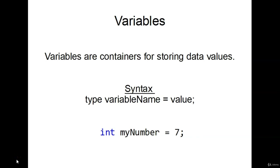In this video, we're going to cover variables. Variables are just containers to store data values. The syntax for declaring a variable: first you say what type it is — float, double, int, or string — then you give your variable a name, followed by a value. For example, we have an int called myNumber and it equals 7. Whenever I call myNumber and print it out, I'm going to get 7.